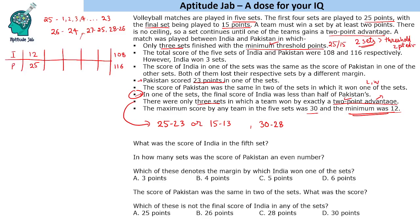Pakistan scores 23 points. We take two possibilities: either Pakistan scores 23 in the last set or in one of the first four sets. The last set is special with a threshold of 15 points; all others are 25 points. If Pakistan scores 23 in the last set, Pakistan has to win by two points, making it 23-21, and India would have lost both those sets.